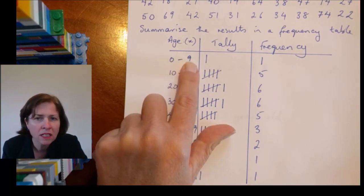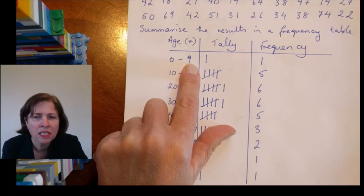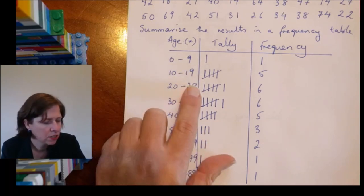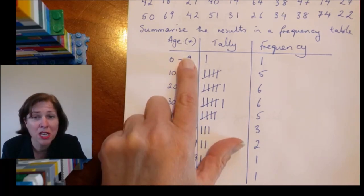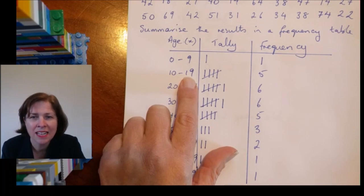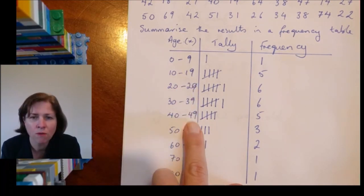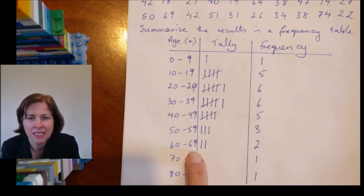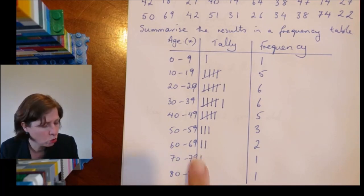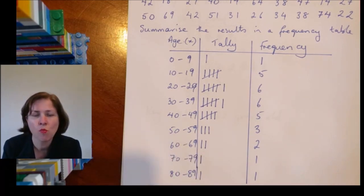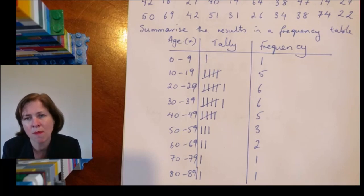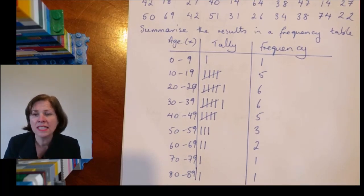So from zero to nine, right, nine minus zero, that gives me nine. Nineteen minus ten, that gives me nine. Forty-nine minus forty gives me nine. Sixty-nine minus sixty gives me nine. All of these are the same width in terms of how many numbers might be included there. Okay, so that's the end of looking at frequency tables.